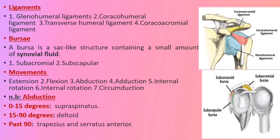Ligaments play an important role in stabilizing the shoulder joint. The glenohumeral ligaments — superior, middle and inferior — extend from the humerus to the glenoid fossa, reinforcing the joint capsule and stabilizing the anterior aspect. The coracohumeral ligament extends from the base of the coracoid process to the greater tubercle of the humerus, supporting the superior part of the capsule. The transverse humeral ligament extends between the two tubercles, holding the tendon of the long head of the biceps in the intertubercular groove. The coracoacromial ligament extends between the acromion and coracoid process, forming the coracoacromial arch over the joint, resisting superior displacement of the humeral head.